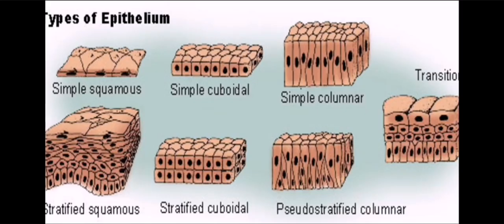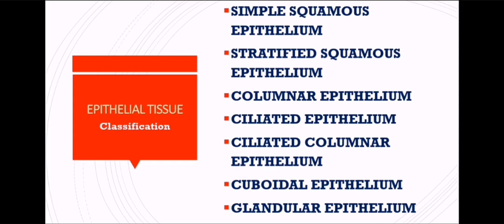In pseudo-stratified columnar epithelium you will see various layers of columnar cells. Transitional epithelium will be discussed further, but in grade 9 we don't cover it in detail — higher classes have a detailed paragraph on it. The full classification of epithelial tissue includes: simple squamous, stratified squamous, columnar epithelium, ciliated epithelium, ciliated columnar, cuboidal epithelium, and glandular epithelium. We'll discuss why each is named as it is in the further slides.